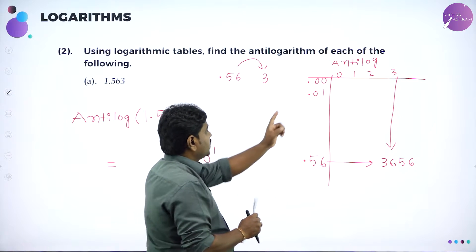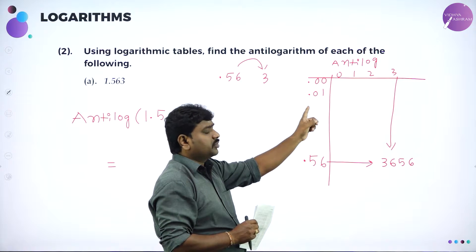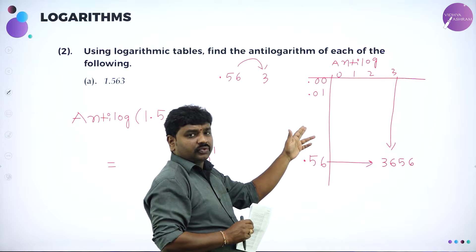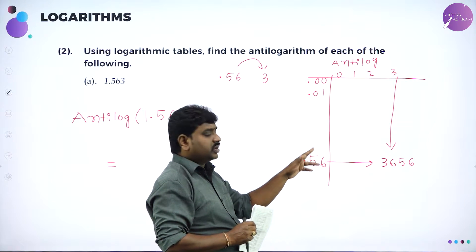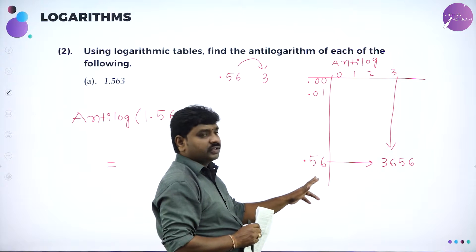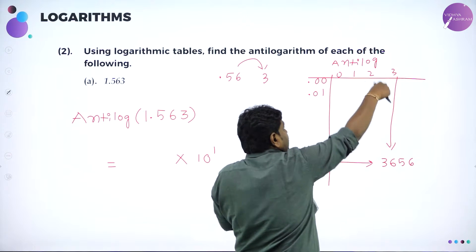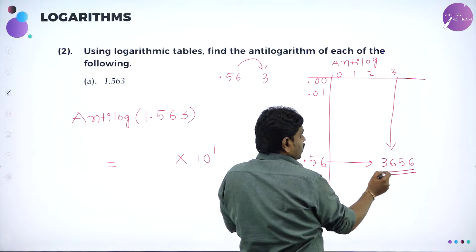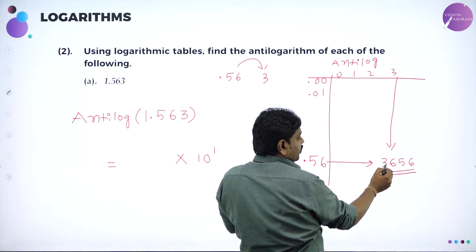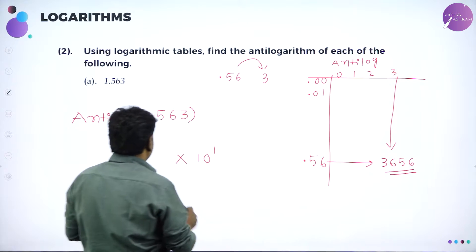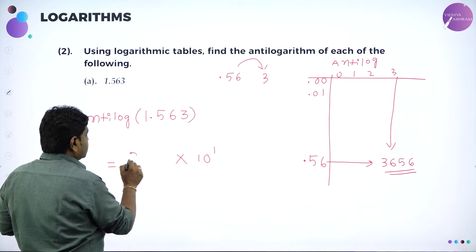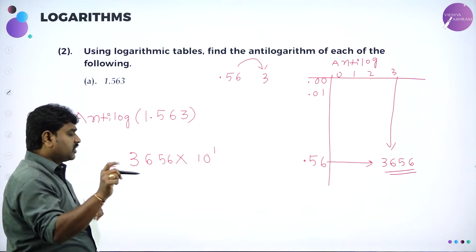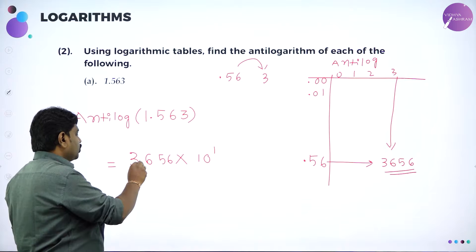So the number from the anti-log table is 3656. Always place the decimal after the first digit, giving 3.656. Therefore anti-log of 1.563 equals 3.656 into 10 power 1.